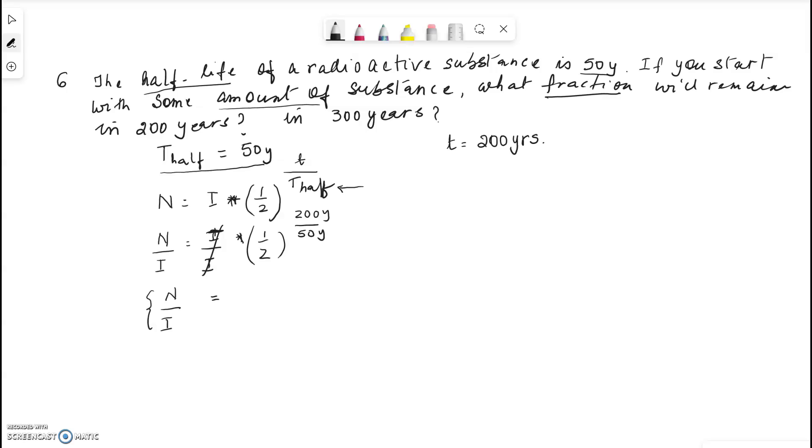So this is equal to one half to the power of 200 over 50. So that is, 50 goes 4 times into 200. So N over I is equal to one half to the 4th power, which is 1 divided by 2 to the 4th power. So that's equal to 1 over 16.